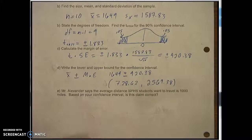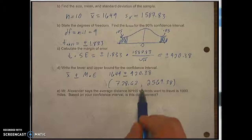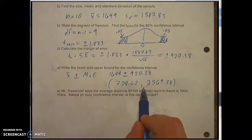So, Mr. Alexander says that the average distance SPHS students want to travel is 1,000 miles. Based on the confidence interval, is this claim correct? Well, since 1,000 falls within our confidence interval, we'd go ahead and say, yeah, that seems plausible.